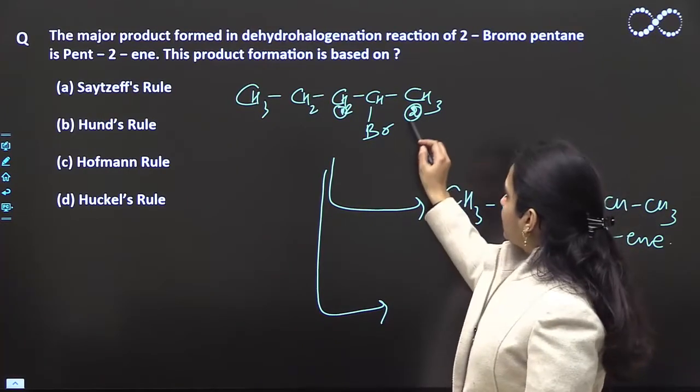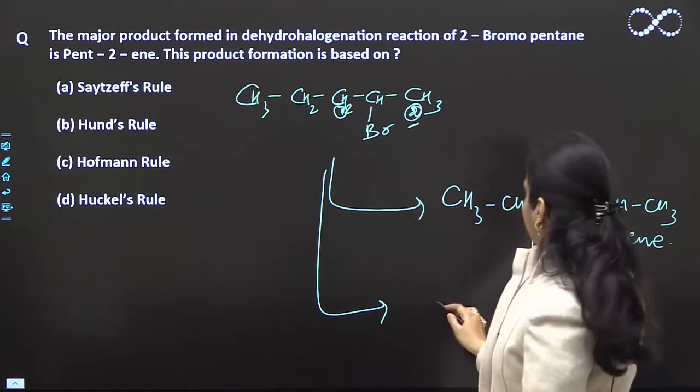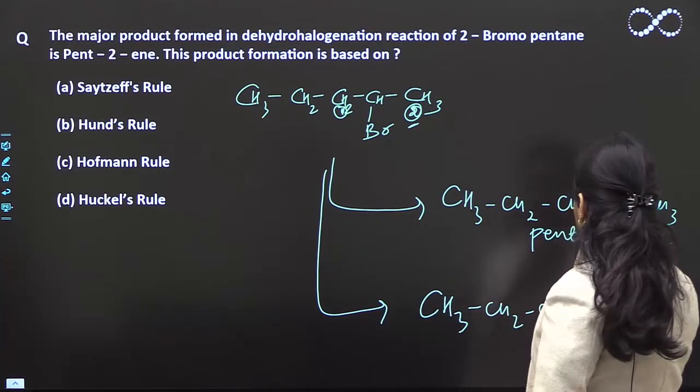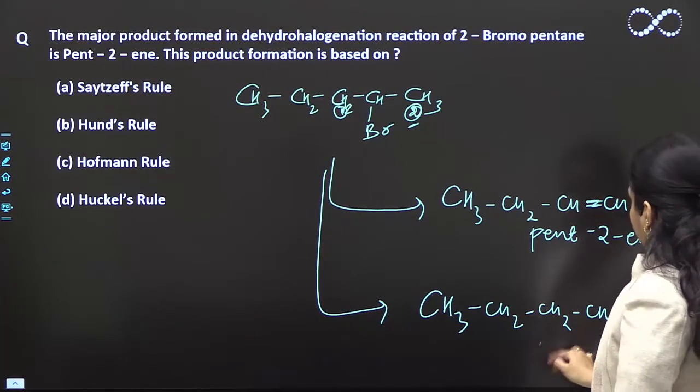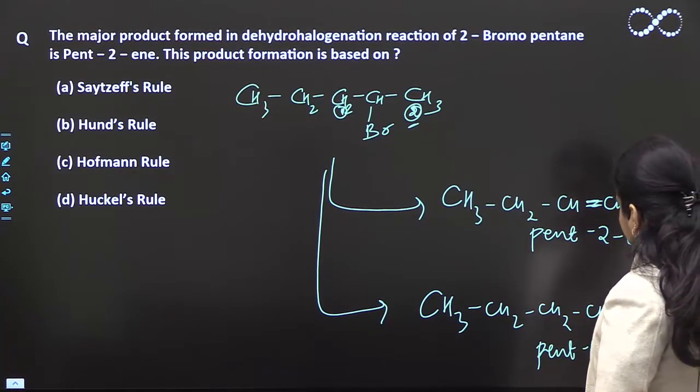And if your hydrogen goes from here, from the terminal carbon, then it will be CH3, CH2, CH double bond CH2. This is pent-1-ene.